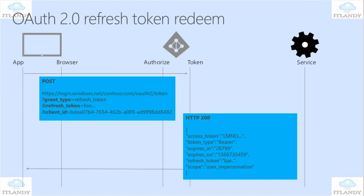It depends on how critical the application is. If it's a really critical app, then you can do it very short. To request a new access token, the application will send a new POST request to the auth token endpoint and provide the refresh token as a query string parameter. You can see it on that blue POST screen — grant type: refresh token. You need the client ID itself.